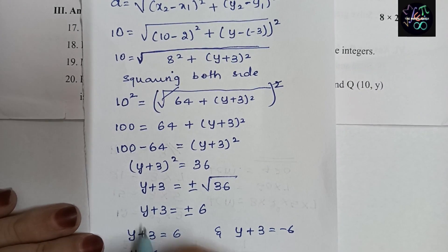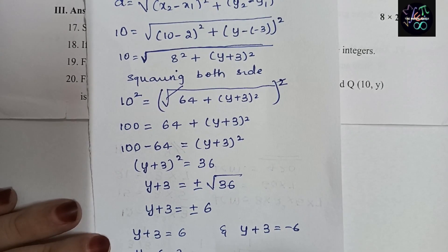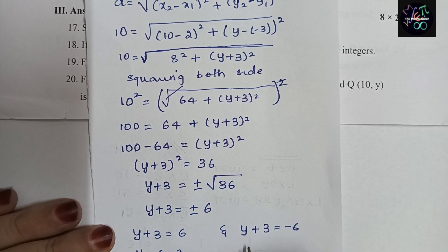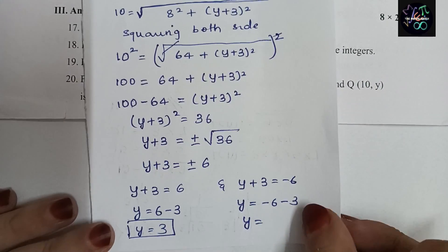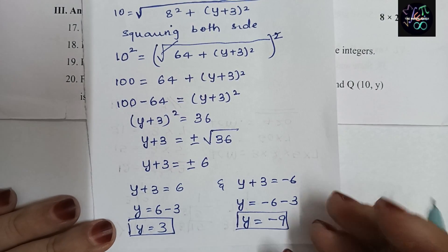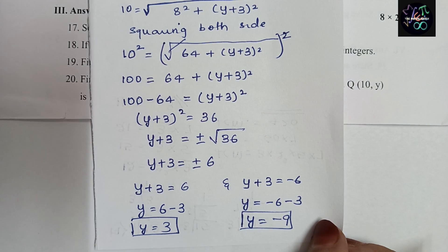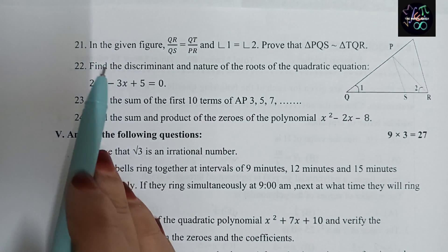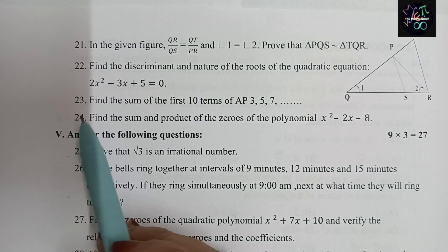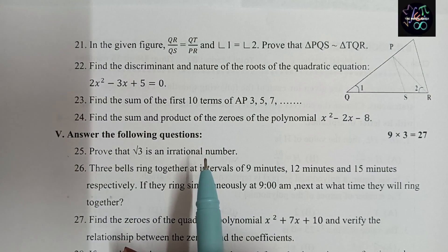From y + 3 = 6: y = 6 − 3 = 3. From y + 3 = −6: y = −6 − 3 = −9. So y = 3 or y = −9. This completes question number 20. Questions 21, 22, 23, and 24 I will do in my next video. Please do like, share, and subscribe to my channel. Thank you.